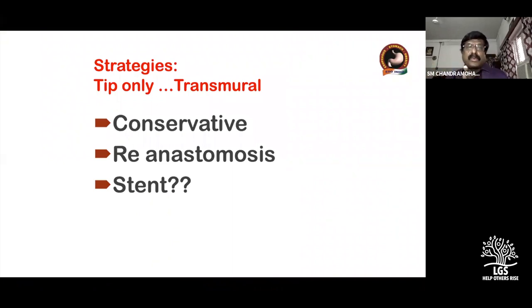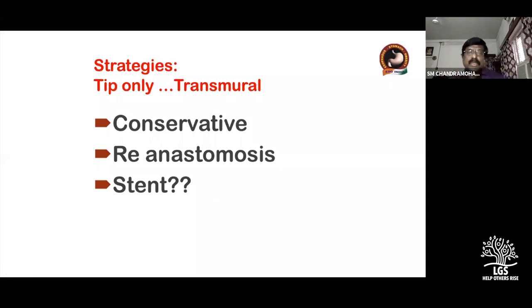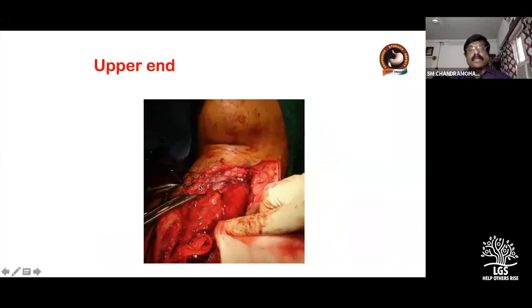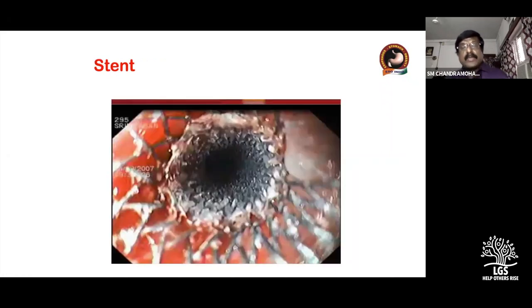Next comes transmural necrosis — tip only. Options are conservative management, re-anastomosis if it is a short segment using the same conduit, or removal. Stenting is not desirable in the neck — stents are used for anastomotic leaks in the chest and are very difficult to keep in the neck. When there is a cervical leak and total colon necrosis, you have no choice but to remove the necrotic conduit, mark the upper end, and plan future reconstruction.